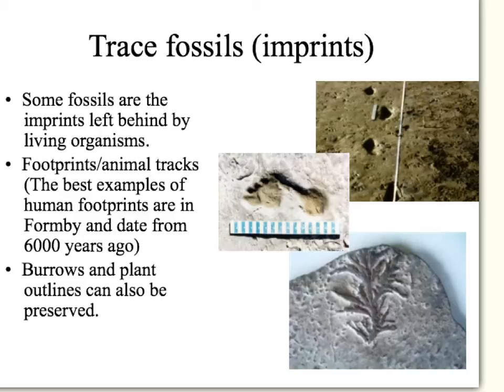And not just of humans — you can see animal tracks too. In the bottom image, you can see outlines of plants, finding out a little bit more about the plants that were living there because of the imprint they left. So although the plant hasn't been fossilised, the imprint it left behind has been fossilised.